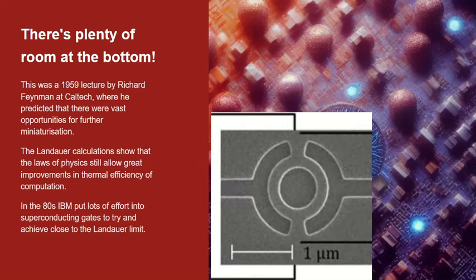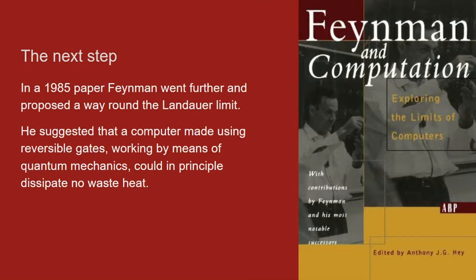Landauer was an IBM physicist, and in the 1980s IBM put lots of effort into superconducting computers as a way of getting close to the Landauer limit. Feynman apparently wasn't aware of Landauer's work until the early 80s, when Bennett brought it to his notice. In a 1985 paper, Feynman went further and proposed a way around the Landauer limit. He suggested that if you had a computer made of reversible gates, the increase in heat due to loss of information wouldn't occur. He said that in principle, by quantum mechanics, you can construct computers which are non-dissipative — which don't generate waste heat.